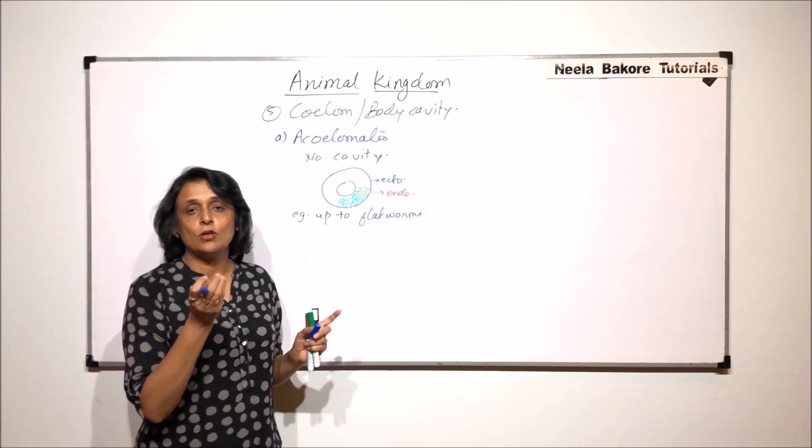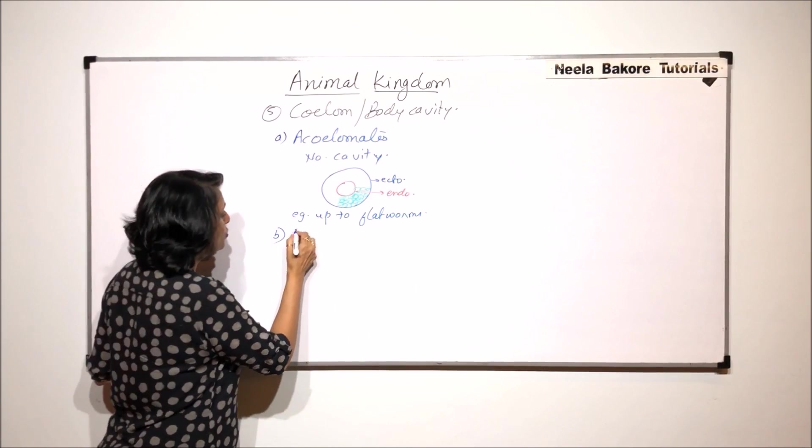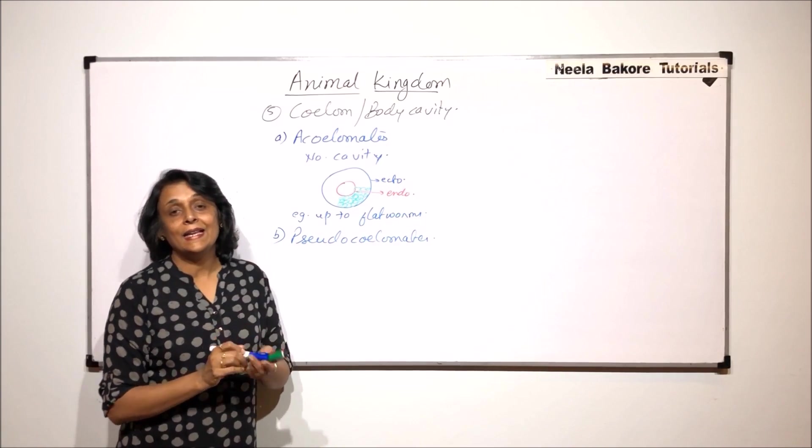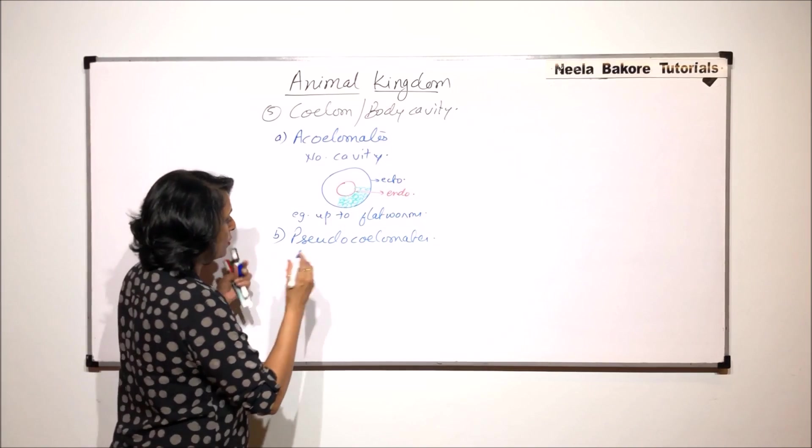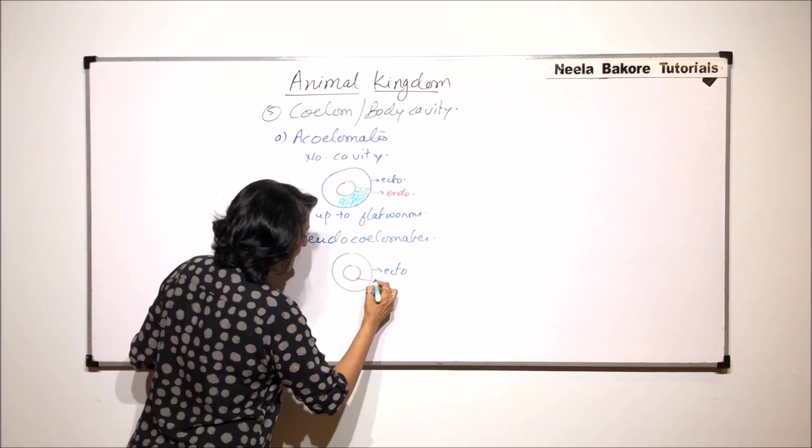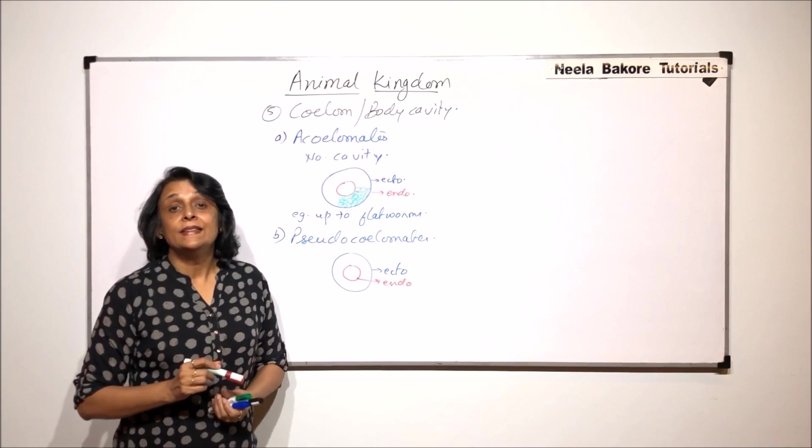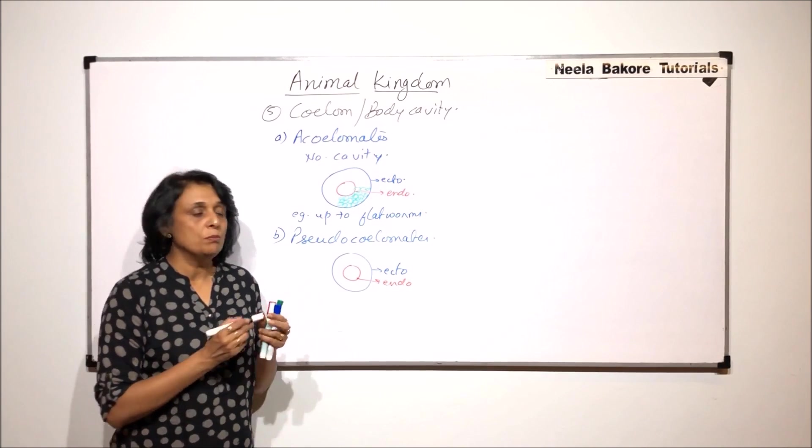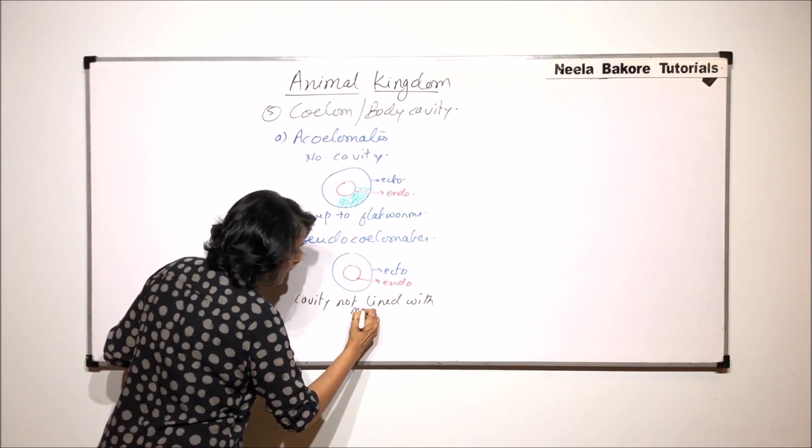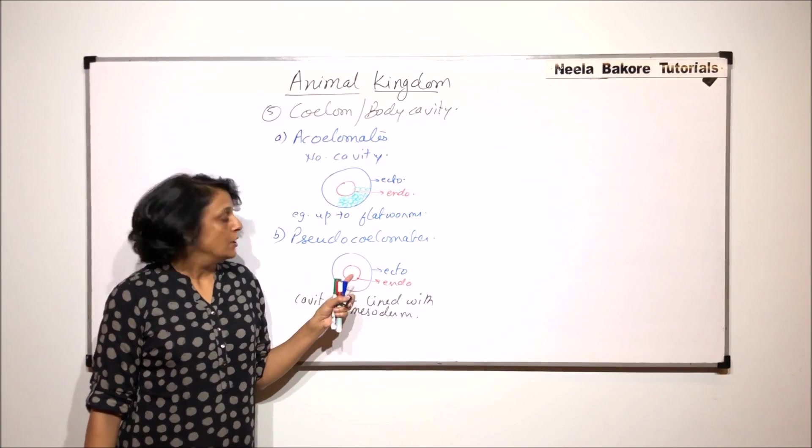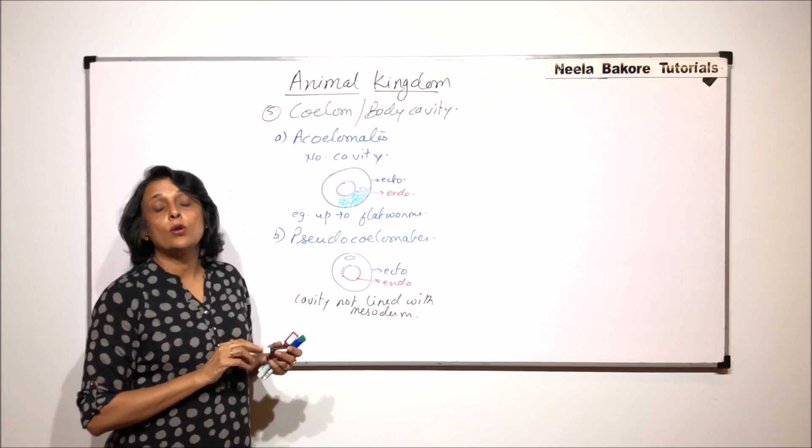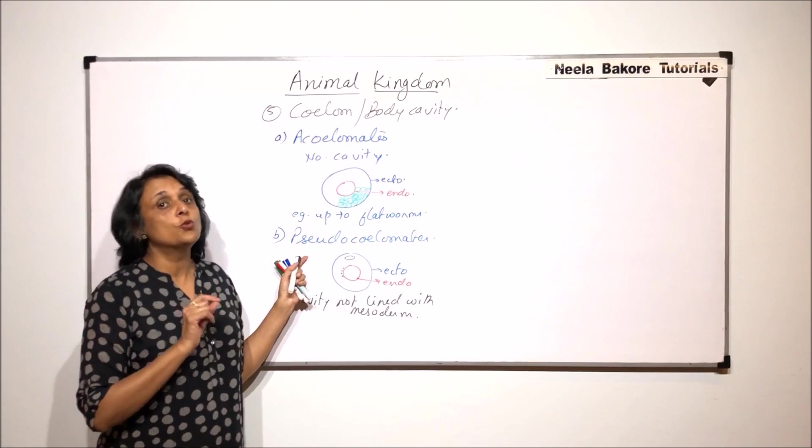The cavity is filled with cells, so there is no cavity that exists. The second type is called pseudocoelomates. Pseudo is false and coelom is again for body cavity. Again, if we talk of, say, this is the ectoderm and the inner one, the digestive system, is this endoderm. Cavity is there, but this cavity is not completely lined with mesoderm. So here we write cavity not lined with the mesoderm. Mesoderm is the middle layer which has to line. So cavity exists but this mesoderm is not there. The mesoderm could be scattered anywhere, it could just line a part or only one layer. So there is a cavity but it is not true coelom or true body cavity.